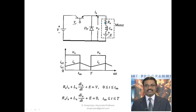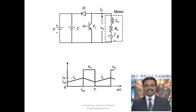Whenever the switch is turned off, freewheeling action takes place through diode Df in the path A2 → Df → A1. When the transistor is on, ia increases; when freewheeling occurs after turn-off, ia decreases. The voltage across the motor equals V when the transistor is on, and becomes zero during freewheeling. The only difference from the separately excited case is that E is variable.